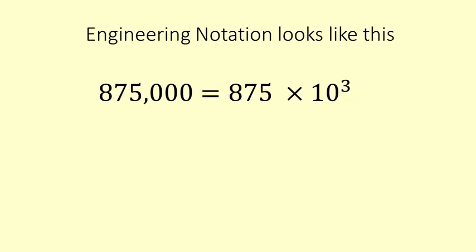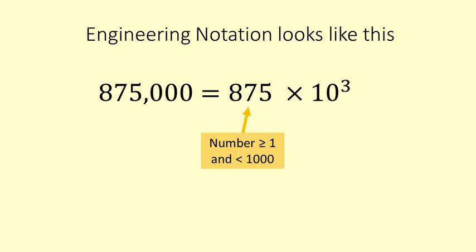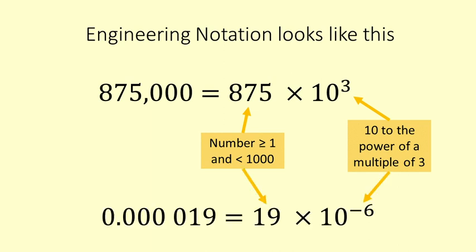Engineering notation is a way of writing large and small numbers in a way that is more compact and makes clear the place value or magnitude of the number. It has two parts: the number part, which is between one and a thousand, and the magnitude part, which is 10 to the power of a multiple of 3. Positive powers correspond to large numbers and negative powers correspond to small numbers.